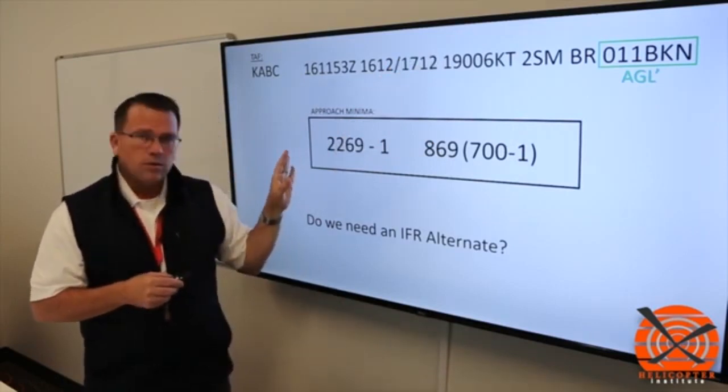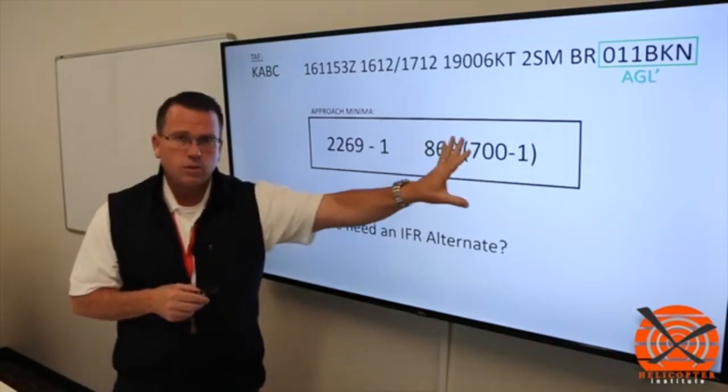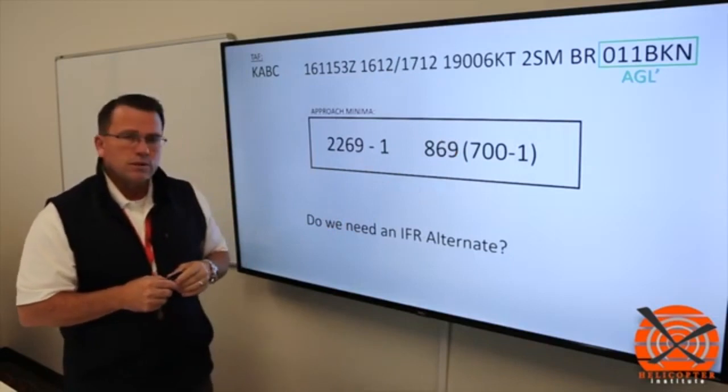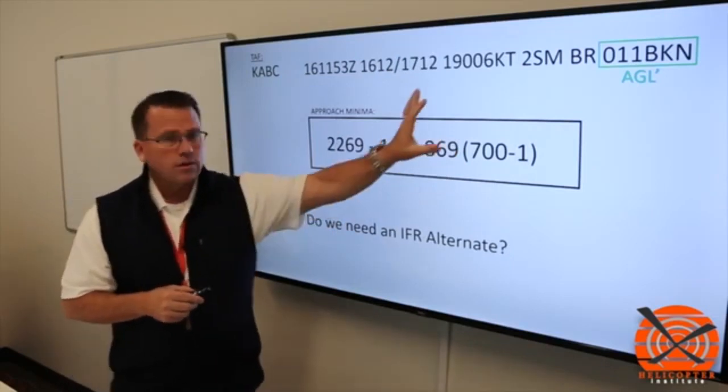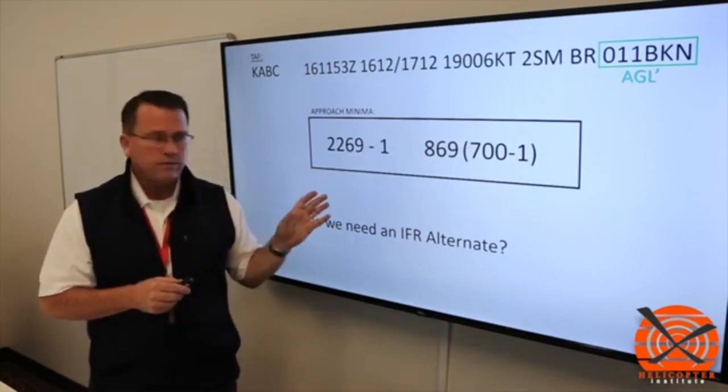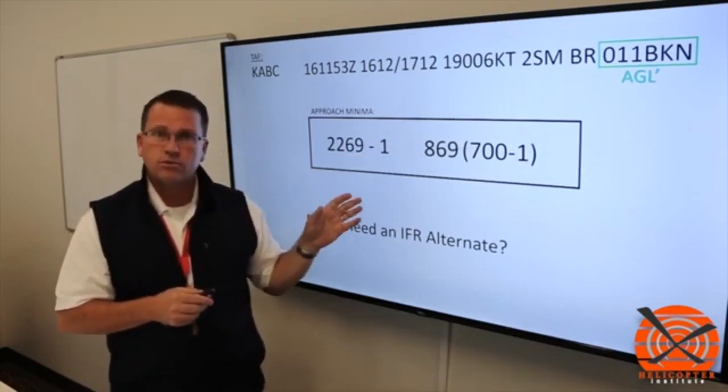So if I'm going to utilize this approach minima, which is what you see here, this would be located on the bottom of the approach plate, we're going to apply these values to that number within the TAF. Well, to do that, we have to know which one of these numbers is the appropriate value to determine that.